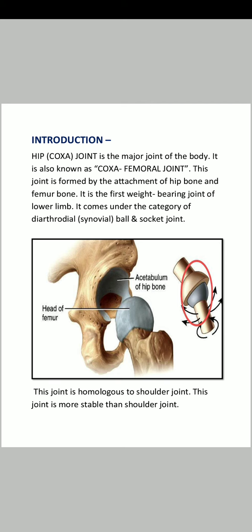The hip joint and shoulder joint have the same type of movements and the same pattern. However, this joint is more stable than the shoulder joint. The shoulder joint is less stable, and the hip joint is more stable.